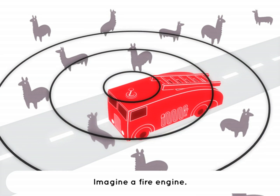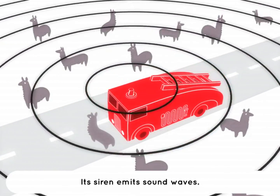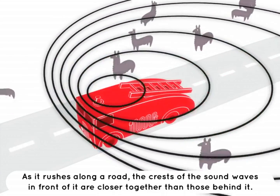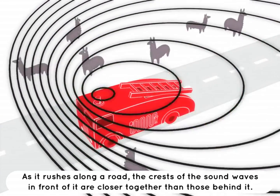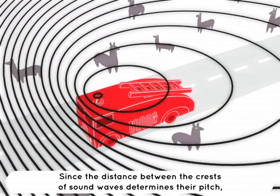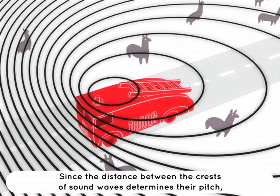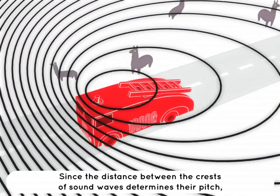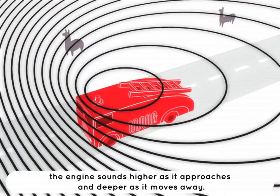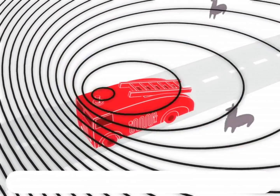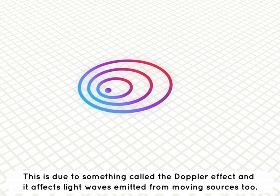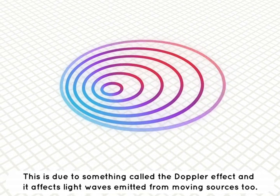Imagine a fire engine — its siren emits sound waves. As it rushes along the road, the crests of the sound waves in front of it are closer together than those behind it. Since the distance between the crests of sound waves determines pitch, the engine sounds higher as it approaches and deeper as it moves away. This is due to something called the Doppler effect, and it affects light waves emitted from moving sources too.